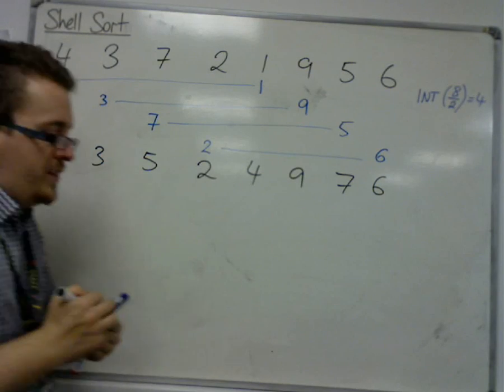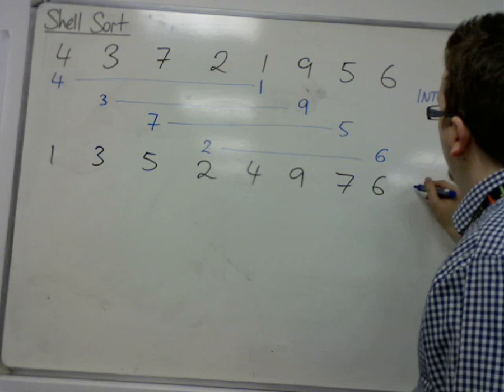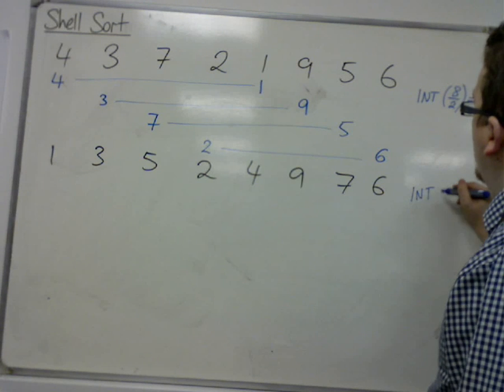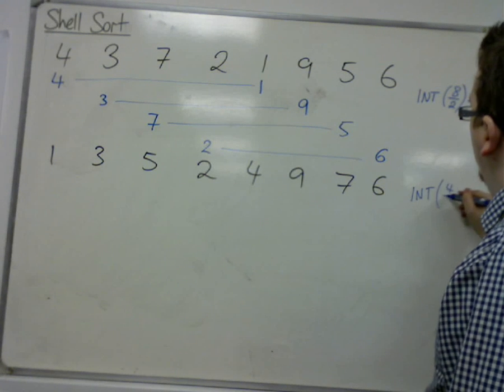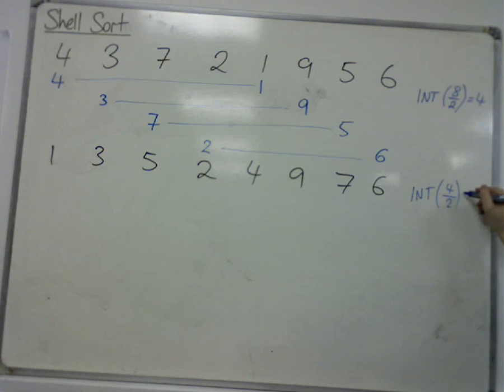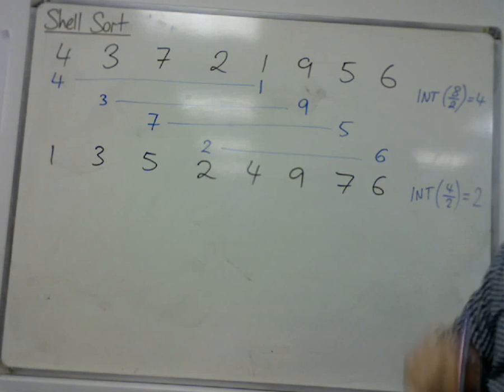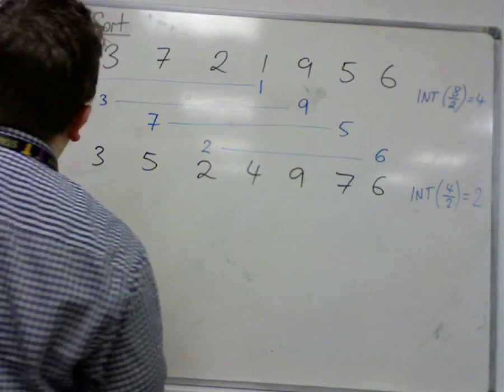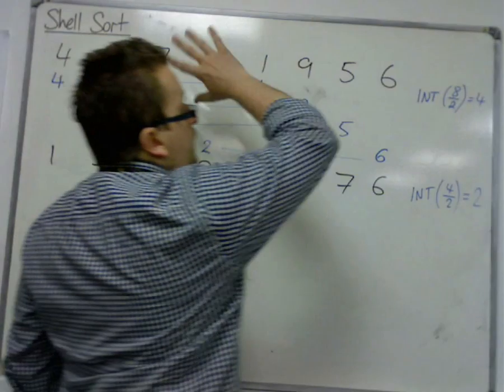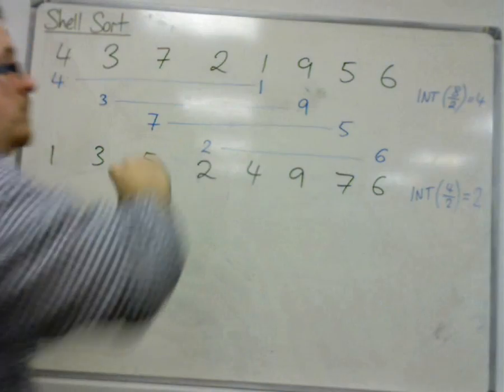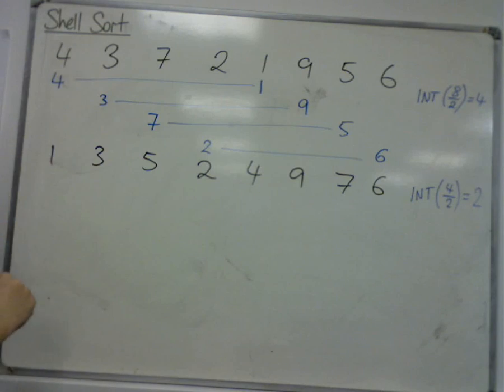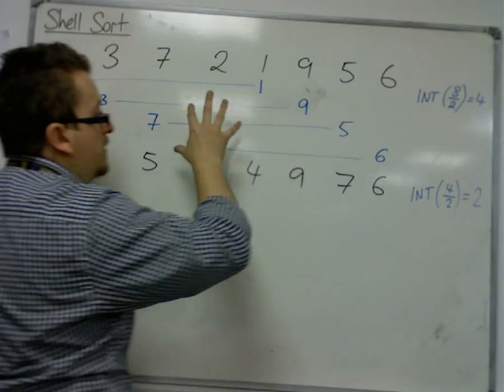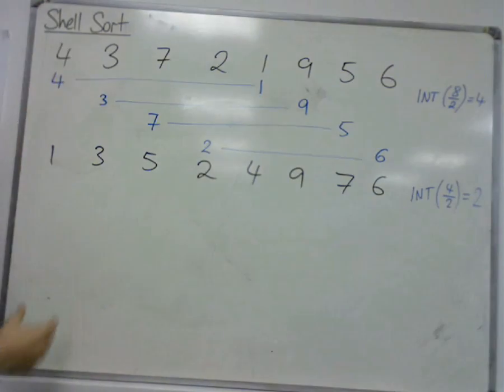Now, what I do at this point is I then say, well, I'm going to take the integer part of the number of sublists that I had, 4, and then divide that by 2, and I get 2. So I'm now going to put it into 2 sublists. So I started with a list, I divided that into 2 to make 4 sublists, and I divide that number into 2 to make 2 sublists.